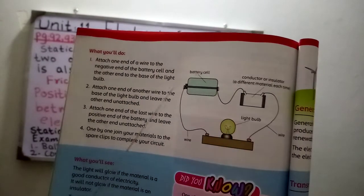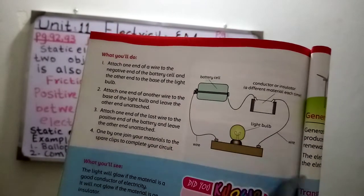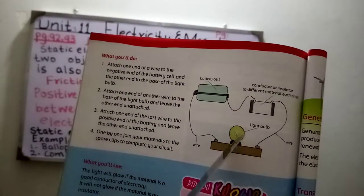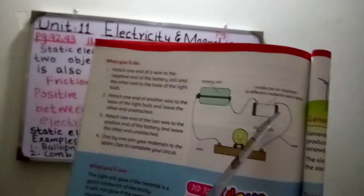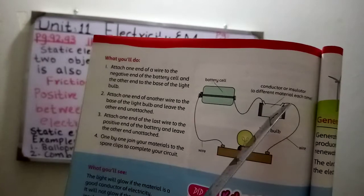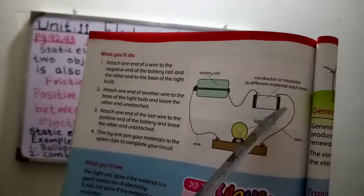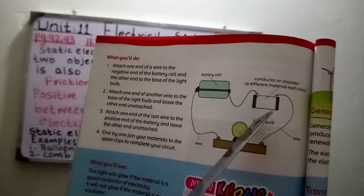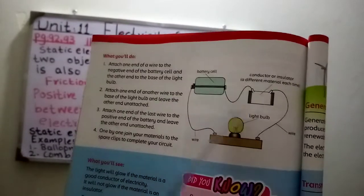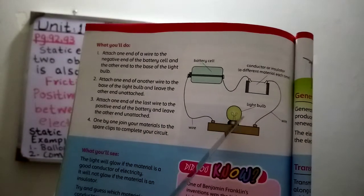This is the battery cell. When you attach different materials - conductors and insulators - the electricity will pass through conductors. When a conductor is used, current will flow and the bulb will glow, as you can see.